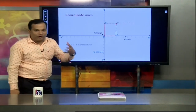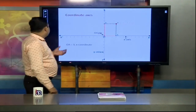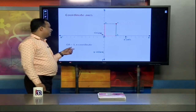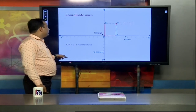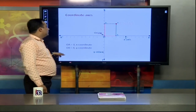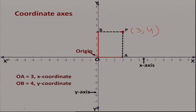So OA is 3 and OB is 4, giving the coordinate of point P as (3, 4).